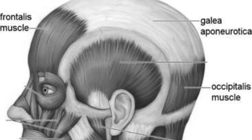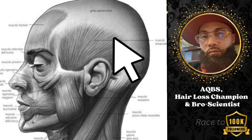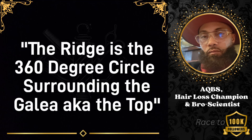The Galea is the fiber at the top of the scalp where the top of your hair sits. It's not a tissue, it's not a muscle, it's not a bone — it's kind of like a fiber. Now around this fiber, this wall, there is the occipital and the temporal. There are several names for it, as you can see on screen. However, in general, it is the surrounding circle.